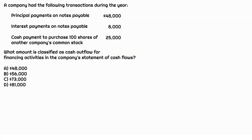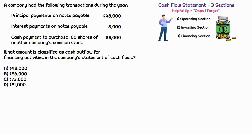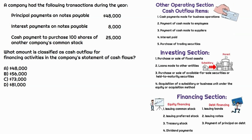We've got the cash flow statement here. Remember: the cash flow statement has three sections. A helpful tip — 'Oops, I Forget' — means O equals operating section, I equals investing section, and 'Forget' is the financing section. We'll bring up the three visuals for each section that help us remember what's included. For the operating section, since this question focuses only on cash outflows, we'll bring up only the outflow items. For investing and financing, there are fewer items, so you can see them all summarized on the screen.